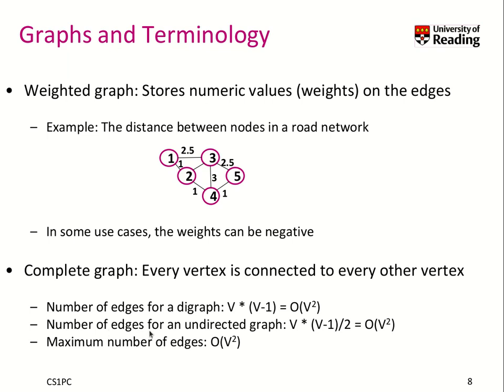By the way, the number of edges that you can have in an undirected graph is V times (V-1) divided by 2, so it's also in the order of V², which means the maximum number of edges is also O(V²) in any case. Here in this case, it's just half the number than we would have in a directed graph.